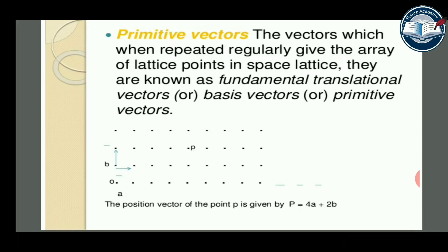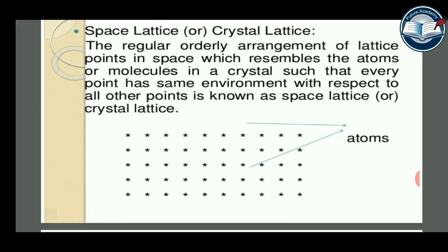Primitive vectors are the vectors which, when repeated regularly, give the array of lattice points in a space lattice. They are known as fundamental transitional vectors, basis vectors, or primitive vectors. The space lattice or crystal lattice is the regular, orderly arrangement of lattice points in space which resembles the atoms or molecules in a crystal, such that every point has the same environment with respect to all other points.